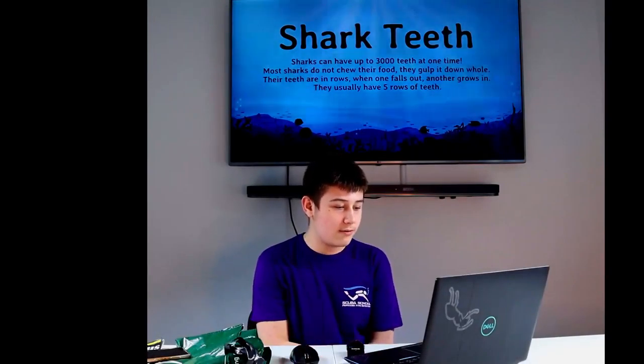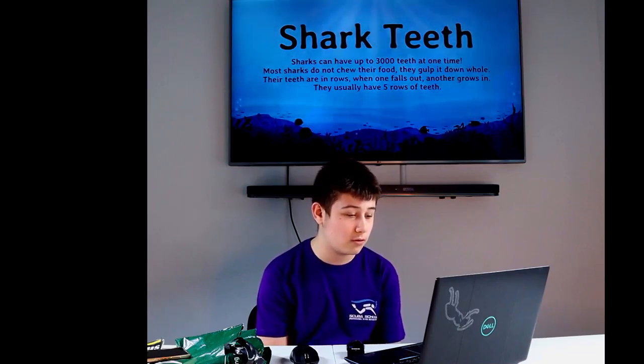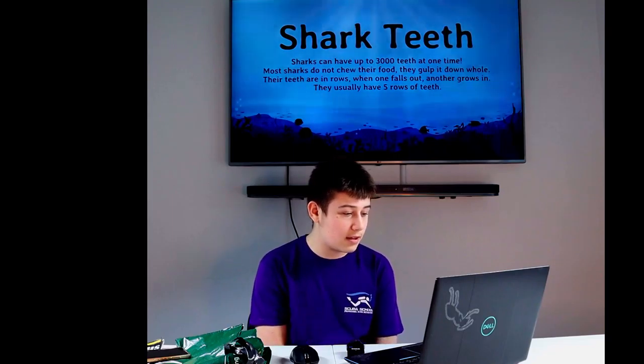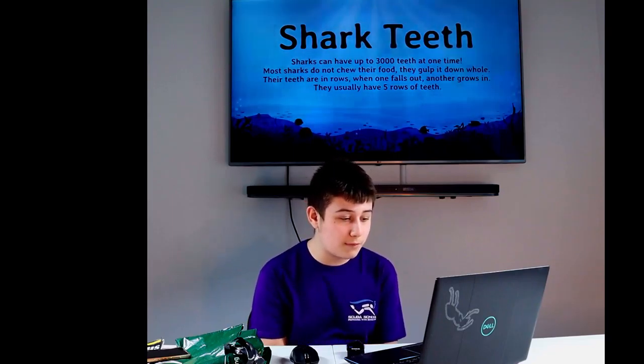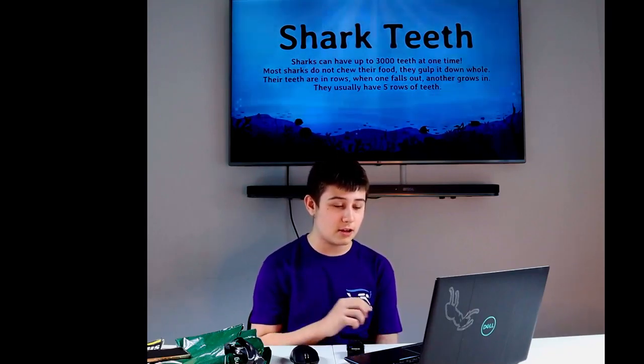Shark teeth: Sharks can have up to 3000 teeth at one time. Most sharks do not chew their food because their teeth just force it back to the mouth at the back of their throat. Then they gulp it down whole. Their teeth are in rows. When one falls out another one grows in. Usually have five rows of teeth which the teeth can continually be replenished.